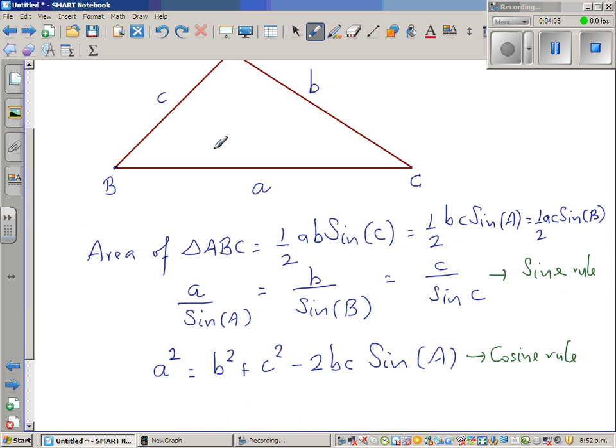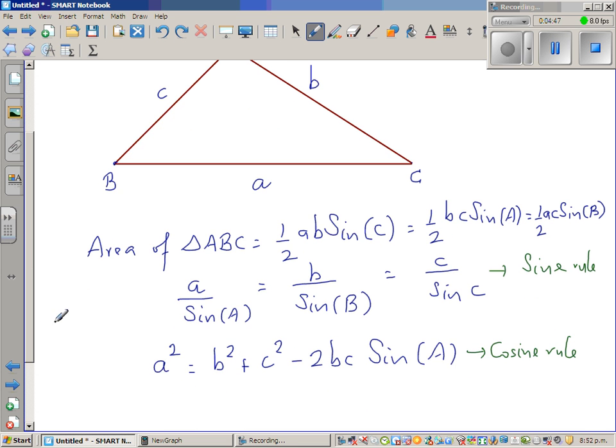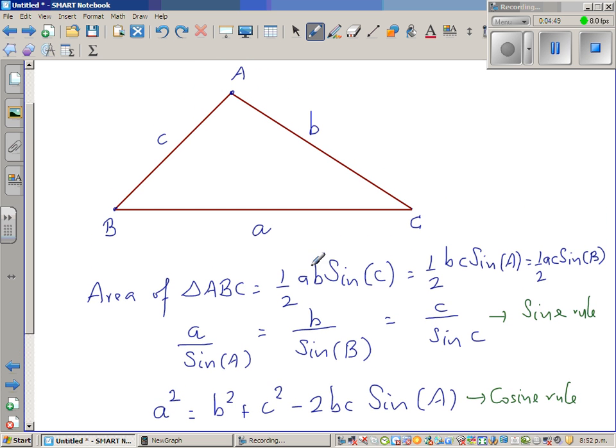And this is the sine rule which is A over sine A is equal to B over sine B is equal to C over sine C. You can also flip this over if you want to find angle. And this is the cosine rule which is A squared equal to B squared plus C squared minus 2BC cosine A.